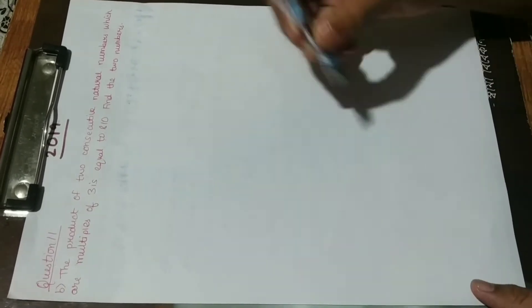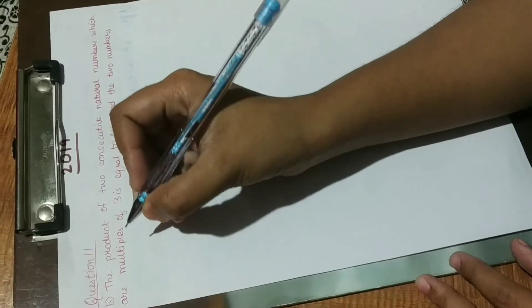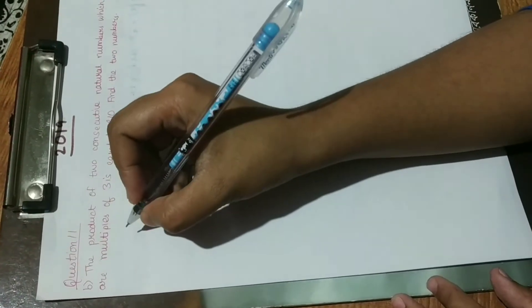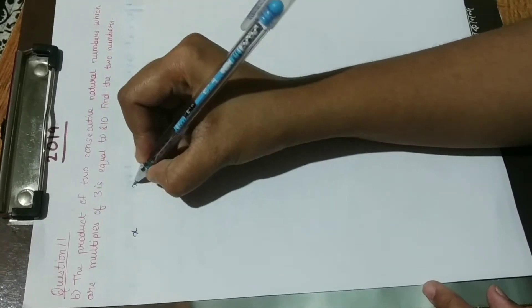Since they have said that they are multiples of 3, we are going to make a slight change in the things which we do in a normal way. Generally we know that if you are considering two consecutive natural numbers, we take it as x and x plus 1. But since they are multiples of 3 over here, we are just going to multiply 3 with each of them.